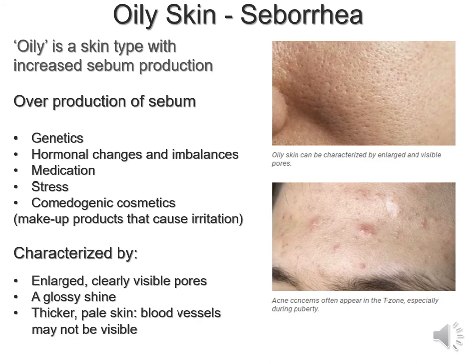Oily skin is also referred to as seboria. It's a skin type in which increased sebum is produced — an overproduction which could be related to genetics, biological factors, hormonal changes and imbalances, certain medications, stress, or comedogenic cosmetics, which are makeup products that can cause irritation. Oily skin is characterised by enlarged, clearly visible pores with a glossy sheen or shine. It's thicker, paler, and blood vessels may not be as visible.